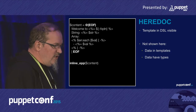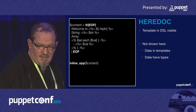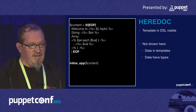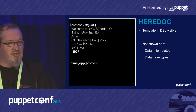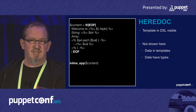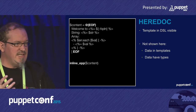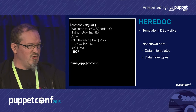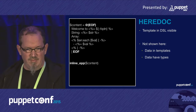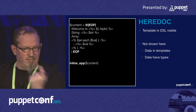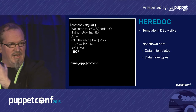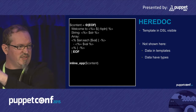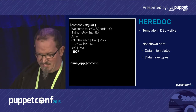What I'm not showing here is data in templates: you can have data in templates and that data can be of certain types you can check. This is especially useful when the template is not only used by one specific module but is more generic, usable by several modules. Using the EPP function you can provide a hash map with parameters that will be inserted into the template.